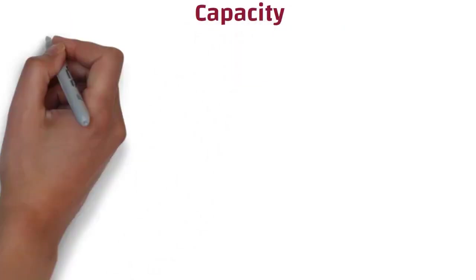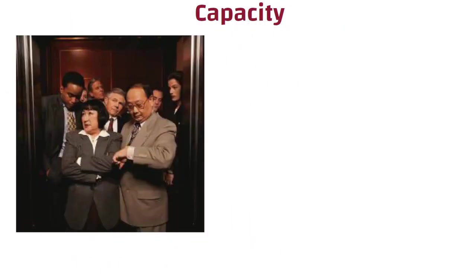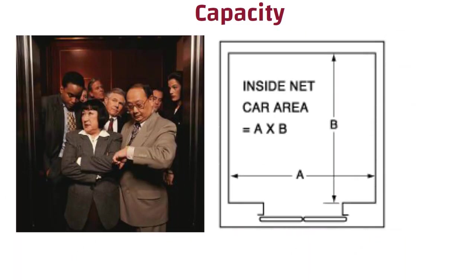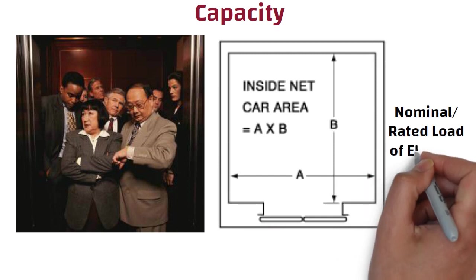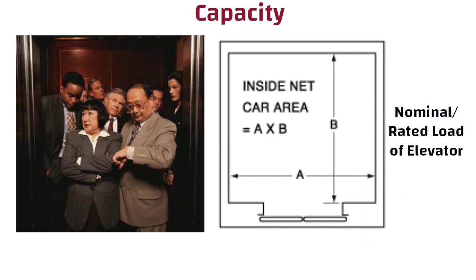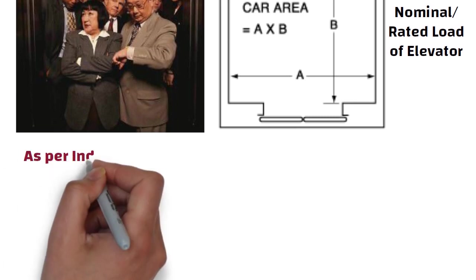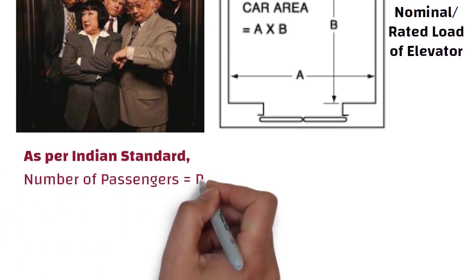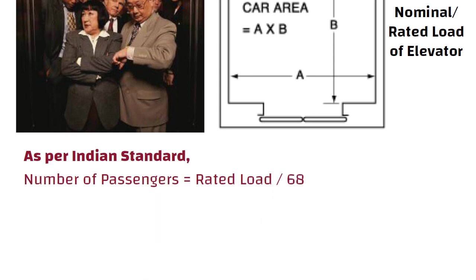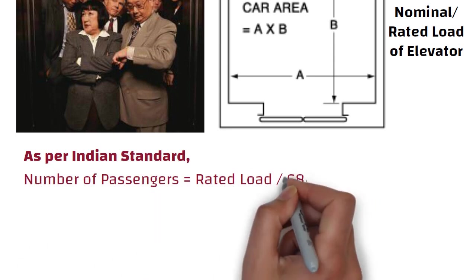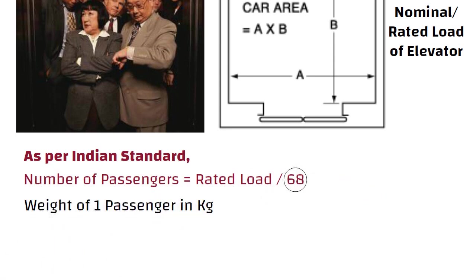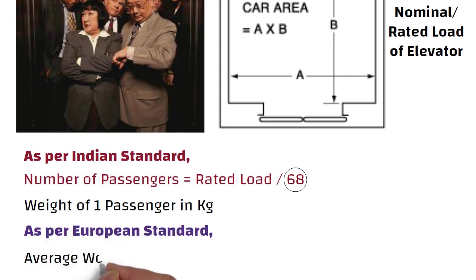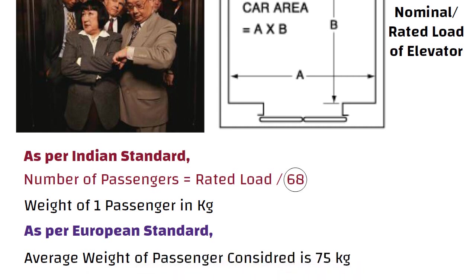Capacity. To prevent overloading of the car by persons, the available area of the car shall be limited and related to the nominal or rated load of the elevator. For calculation of number of passengers, as per Indian standard, number of passengers equals rated load divided by 68, where 68 is the weight of one passenger in kilograms. Whereas as per European standard, the average weight of a passenger considered is 75 kilograms.